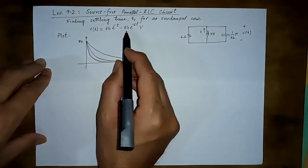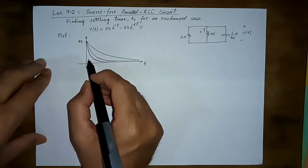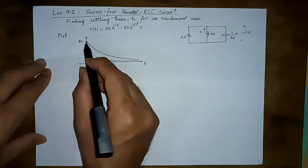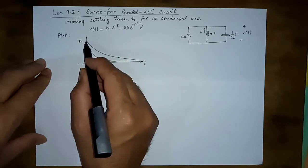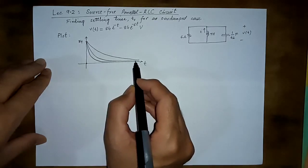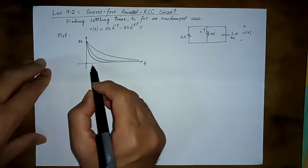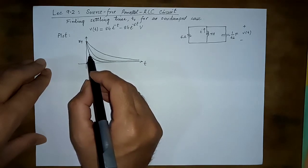This term is this one and this term is this one. Although both of the terms start from 84, their difference is going to be zero so the overall response will start from zero. Ultimately they will become zero, so their difference will become zero.